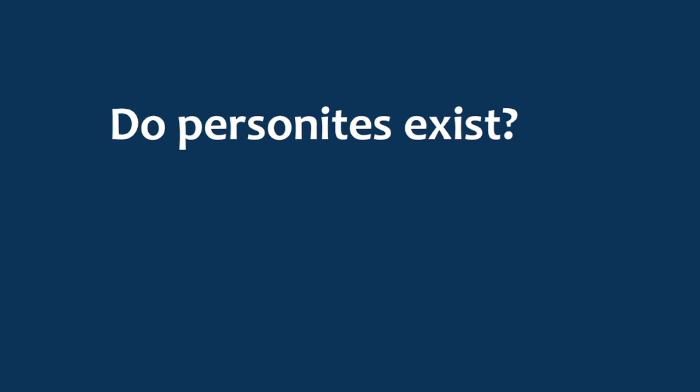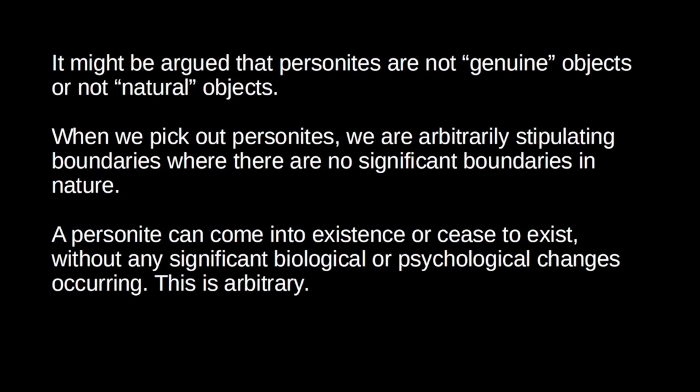What might we say in response? One option — the common sense option — is just to deny that personites exist. If there are no personites, there's no personite problem. But why should we say personites don't exist? If you take my life up to the age of 30, that's a personite — and if you say that personite doesn't exist, are we saying my life up to age 30 never happened? Perhaps the issue is that personites are not genuine objects or natural kinds in some sense. When we say a personite exists, we're just arbitrarily stipulating a boundary where there actually is none in nature. As I am speaking these sentences, an indefinite number of personites cease to exist — but that seems totally arbitrary, because there are no significant changes in the biological or psychological states occurring as I speak. Personites, then, are not genuine objects because their boundaries are arbitrary.